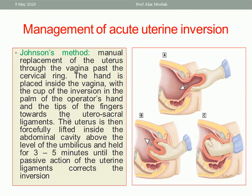Then try to insert the inverted uterus by hand. Hold the uterus with fingertips directed towards the uterosacral ligament, and gently push the fundus through the cervical ring back into the abdomen — gradually push until the uterus regains its position. If the placenta is completely separated, insert a fist of one hand for three to five minutes until the ligaments become strong enough to keep the uterus in position and prevent recurrence.